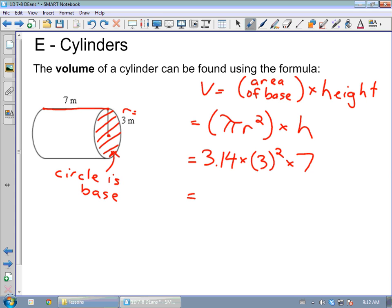And then we just need to evaluate this expression. Remember order of operations: you want to do that squaring first, the three squared before you do any multiplication. So I'm just going to write that step out. 3.14 times 9 times 7, and I get 197.82 meters cubed for my volume.